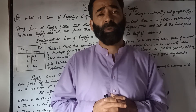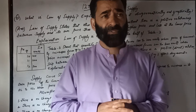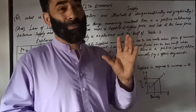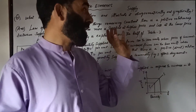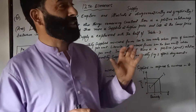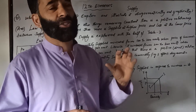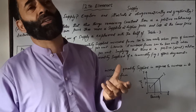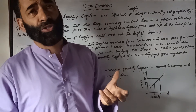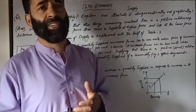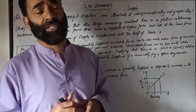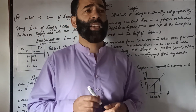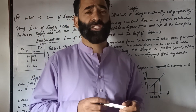In the law of supply, other things remaining constant means things like the price of factors of production, the price of related goods, and the technique of production are all held constant. When these are constant, we see that there is a positive relationship between price and supply.